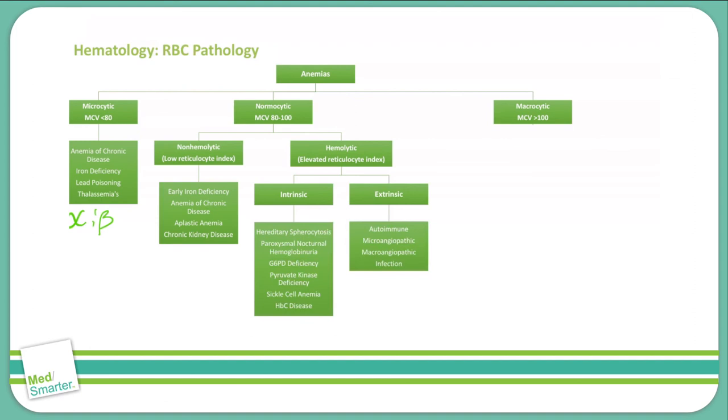Moving on to macrocytic anemia, this is broken down into two different types. You have megaloblastic and non-megaloblastic. The megaloblastic is due to failure of DNA synthesis and the preservation of RNA synthesis, which gives us a restricted cell division in the progenitor cells. So what you're really seeing with megaloblastic anemia is hypersegmented neutrophils. Those hypersegmented neutrophils will help you establish a megaloblastic versus a non-megaloblastic macrocytic anemia.